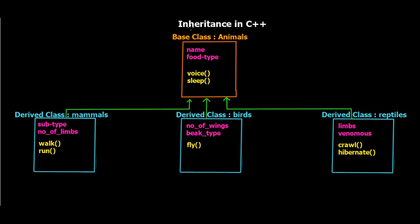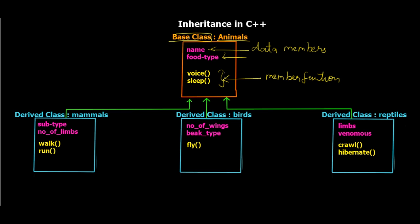On the digital blackboard, I have a real-world example. The base class is named Animals — the pink values are data members and the yellow values are member functions. Three derived classes inherit from Animals: Mammals, Birds, and Reptiles. The derived class Mammal has its own two unique data members and two unique member functions. Birds have two different data members and one unique member function — fly — since mammals don't usually fly, that property is unique to Birds.